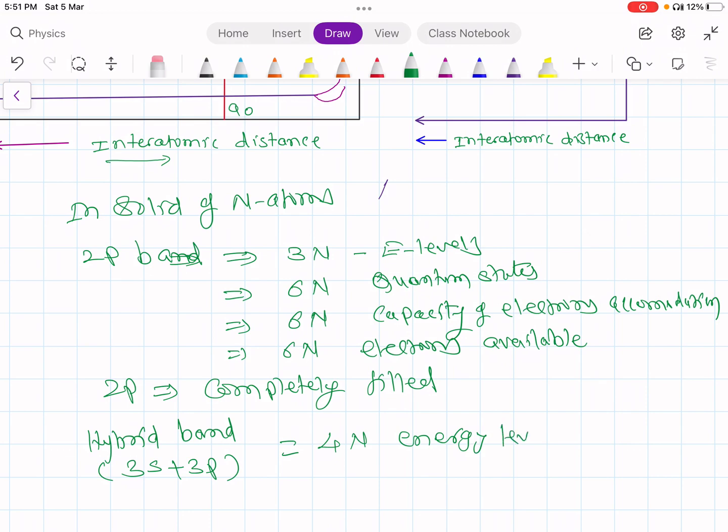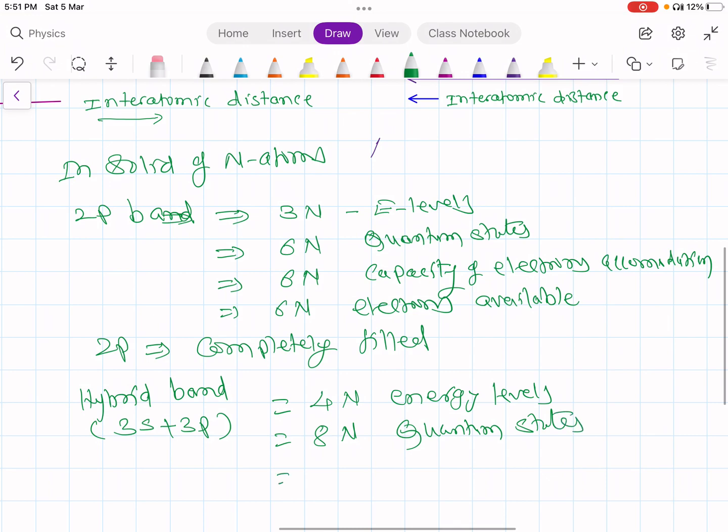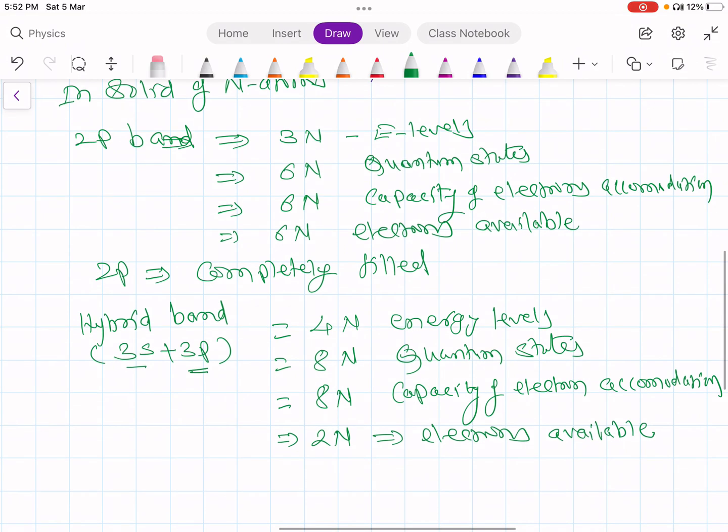4n energy levels means there are 8n quantum states. Then it can accommodate maximum 8n electrons capacity. Capacity of electron accommodation. Maximum it can accommodate 8n electrons. But in this case, as I said, 3p is empty and 3s is completely filled. So only 2n electrons are available. And therefore 6n quantum states are empty.